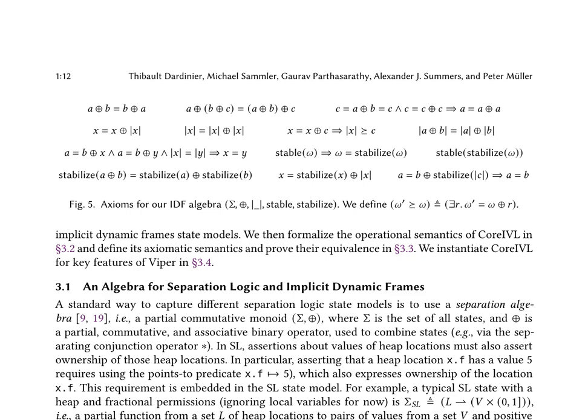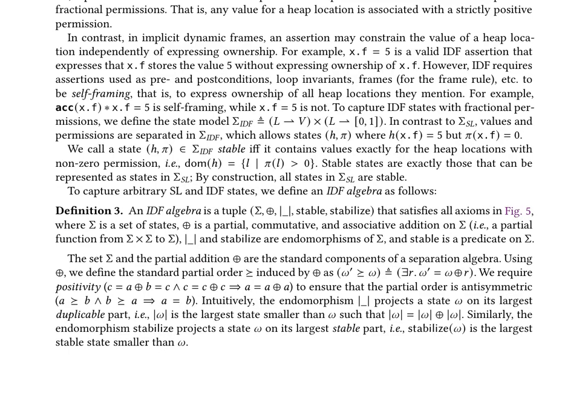The authors introduce an algebra for separation logic in implicit dynamic frames, defining a partial commutative monoid (Σ, ⊕) to capture various separation logic state models. Specifically, the state model Σ_SL is a partial function from a set of heap locations to pairs of values and positive fractional permissions. In contrast, the state model Σ_IDF separates values and permissions, allowing states where a location has a value but no permission. The IDF algebra is defined as a set of states Σ equipped with a partial addition ⊕, endomorphisms, and a predicate stable.